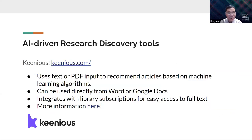We also have AI-powered research discovery tools. One is called Keenious — an AI-powered research discovery platform where you can use text or PDF input to get article recommendations based on machine learning algorithms. You can use it directly from Word or Google Docs. Keenious seamlessly integrates with library subscriptions so you can easily access library resources when finding an article. We have a library guide specifically for Keenious as well.